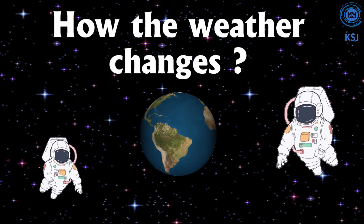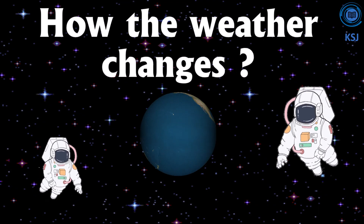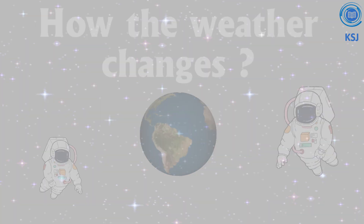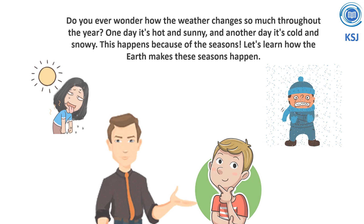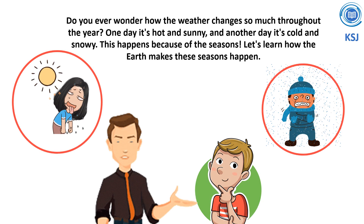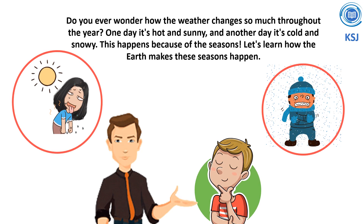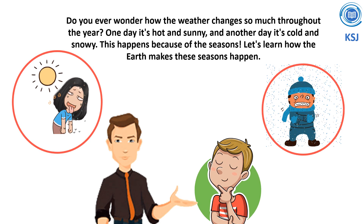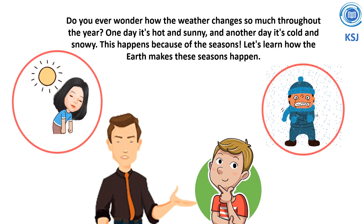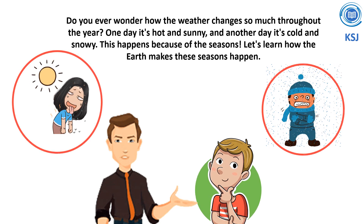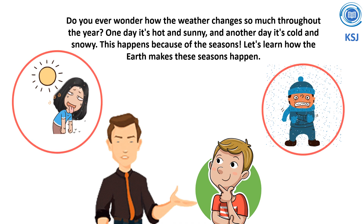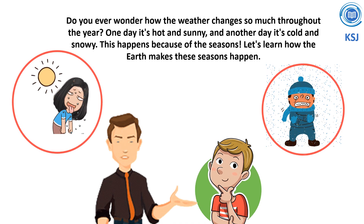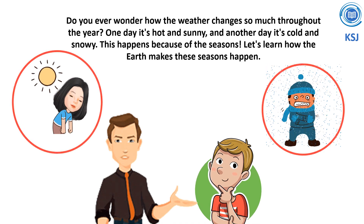Do you ever wonder how the weather changes so much throughout the year? One day it's hot and sunny and another day it's cold and snowy. This happens because of the seasons. Let's learn how the earth makes these seasons happen.